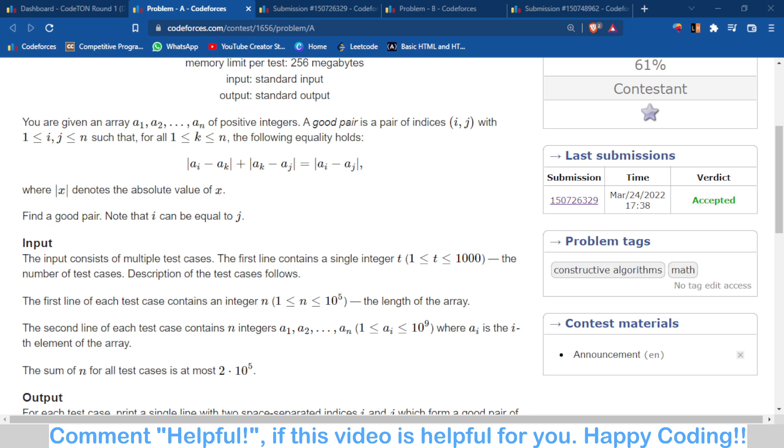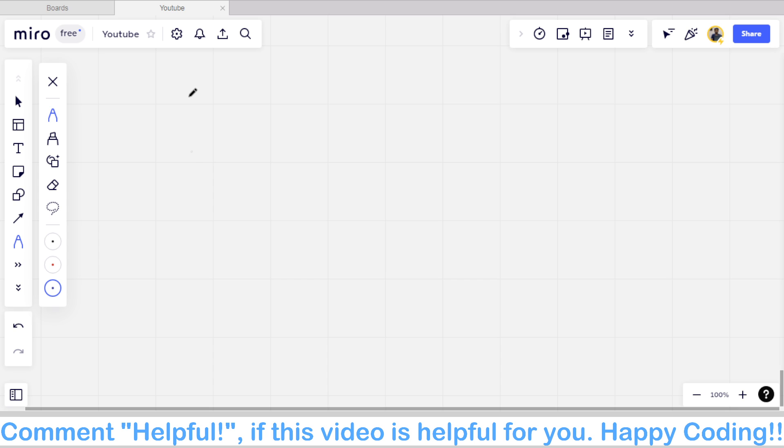I will use the whiteboard to explain that. It is written like |ai - ak| + |ak - aj|